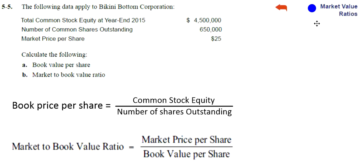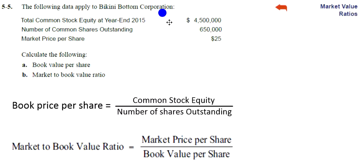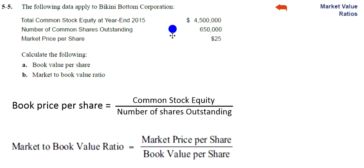In this video, we are looking at market value ratios, problem 5-5 in your homework. We have some data from the Bikini Bottom Corporation — their total common stock equity, their number of common shares outstanding, and the market price per share.